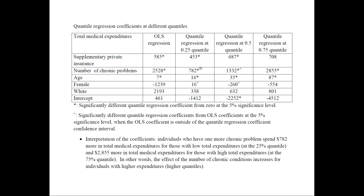For the low quantiles we find significant differences — those coefficients are significantly different from the OLS. But for the high quantile, the magnitudes are very similar, so there's no significant difference. When writing a quantile regression paper, always denote significant differences from the OLS regression. You may also want to test for significant differences between the quantile coefficients themselves — for example, whether the coefficient of 782 at the 25th quantile differs from 2,855 at the 75th. Programs exist to test this.